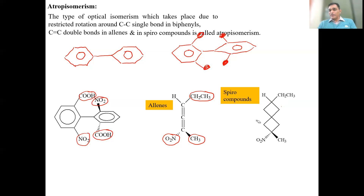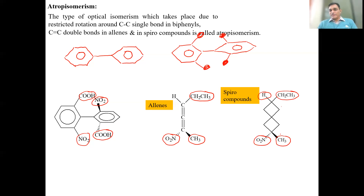The two rings in the bicyclic compound become perpendicular to each other under the same condition — when bulky groups are introduced. For example, one ethyl group, one H, one NO2, and one CS3 group have been placed. Due to steric hindrance between these groups, the two rings move to the most stable position — which is when they are perpendicular to each other — to minimize steric hindrance.